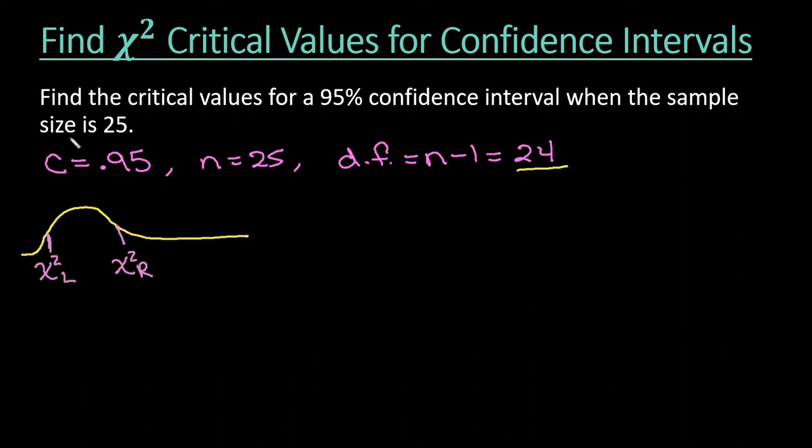Because we have a 95 percent confidence interval, that tells us that 95 percent of our area is in between these two values. And so what we need to do is find the area on the outside. So basically, the area on the outside is our alpha level. So alpha is really just related to our confidence level by doing 1 minus 0.95.